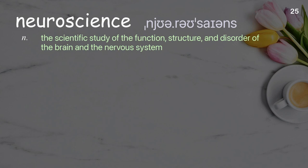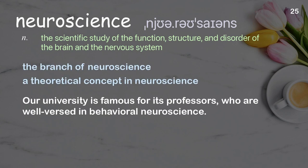Neuroscience: the scientific study of the function, structure, and disorder of the brain and the nervous system. Examples: the branch of neuroscience, a theoretical concept in neuroscience. Our university is famous for its professors who are well-versed in behavioral neuroscience.